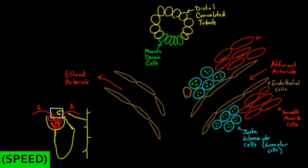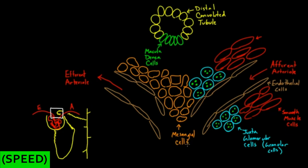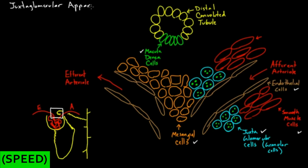Now I've talked about four cell types. Let's round it out with the last cell type. In orange, this is the mesangial cell. Mesangial cells are really there for structure — to hold the whole thing together so that the blood vessels and the nephron are in close contact and structurally sound. Think of them as being there for support reasons. Combined, if you think about all this together — the macula densa cells, the endothelial cells, the smooth muscle cells, the juxtaglomerular cells, and the mesangial cells — put together, this whole thing is the juxtaglomerular apparatus. Kind of a funny word, but it's how people refer to all these cells.